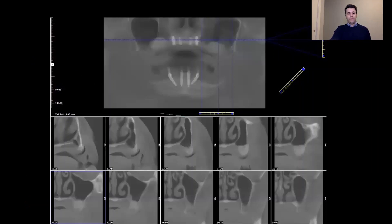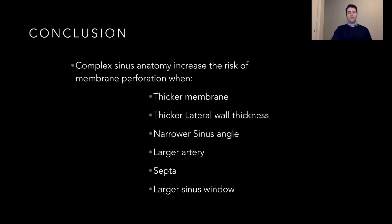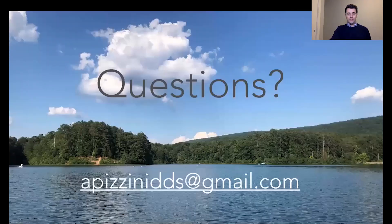We came back six months later and evaluated the volume gained. In both the upper right and upper left areas, we grew enough bone to predictably place 12-millimeter implants. In conclusion, complex sinus anatomy increases the risk of membrane perforation. We need to be more careful when we have a thicker membrane, a thicker lateral wall, a narrower sinus angle, a larger artery, septa within the sinus, and when making a larger window. Thank you so much for your attention — I hope you enjoyed the presentation. If you have any questions, you can reach me through my email.